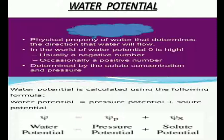If some solute is dissolved in pure water, the solution has fewer free water molecules and the concentration of water decreases, reducing the water potential. All solutions have a lower water potential than pure water. Since the water potential of pure water is zero, the water potential of solutions must be negative. The magnitude of this lowering due to dissolution of solute is called solute potential, represented by psi-s (Ψs). Solute potential is always negative — more the solute particles, lower the solute potential.